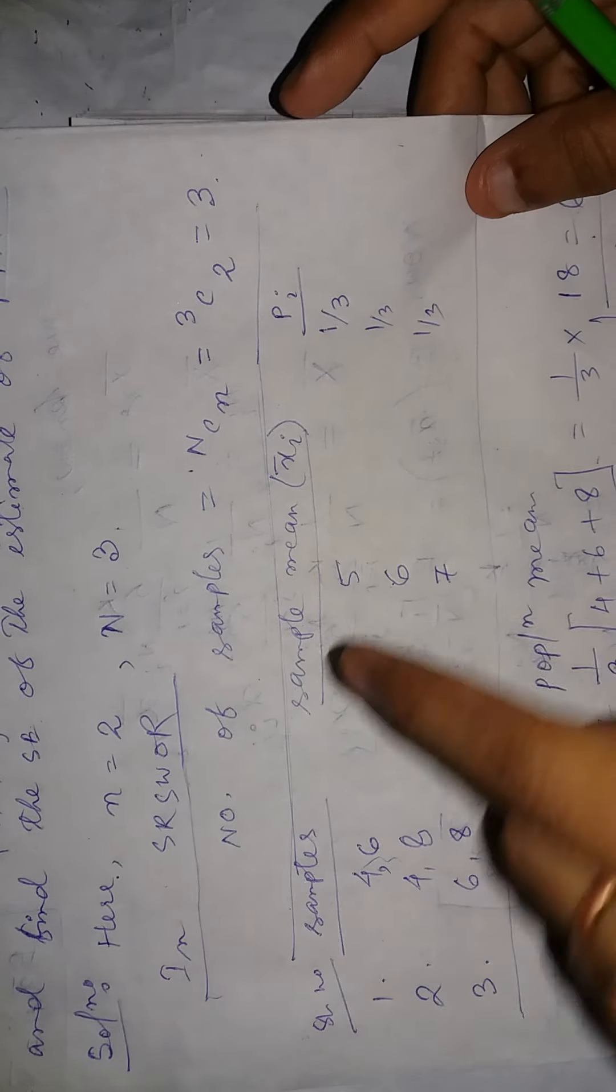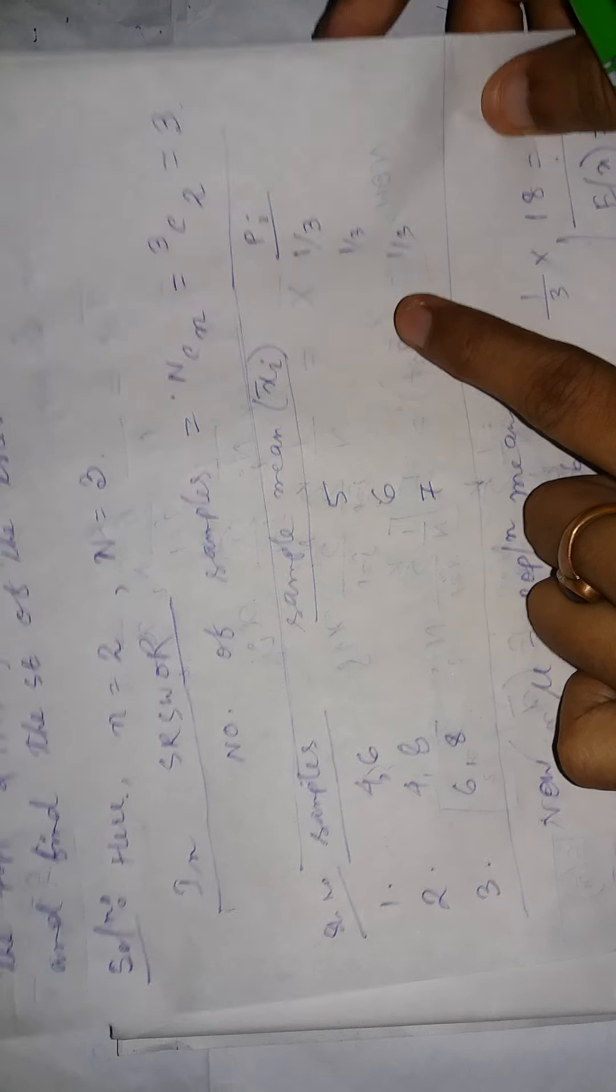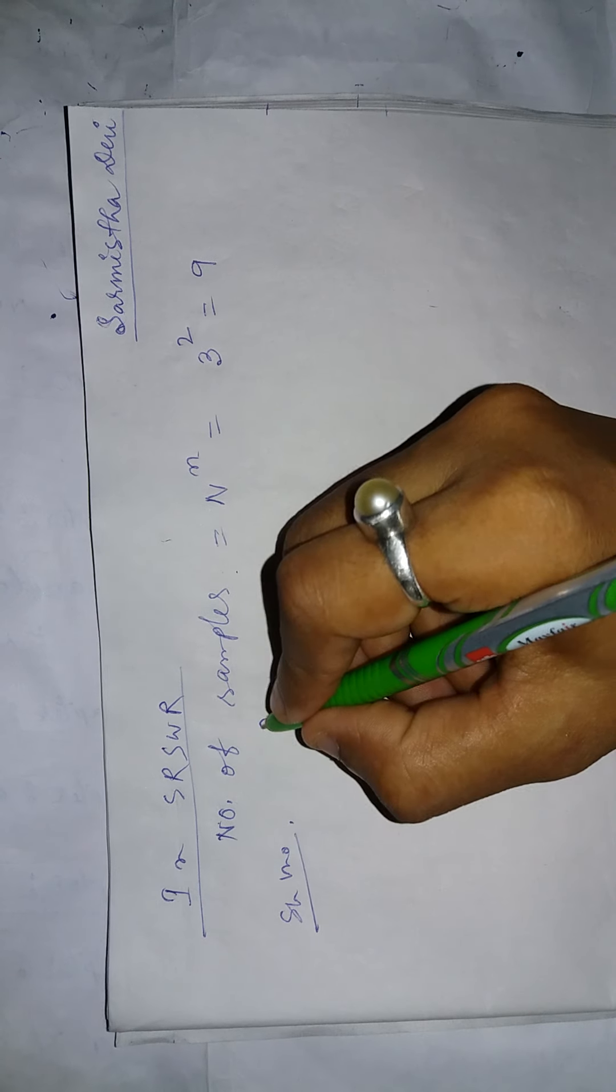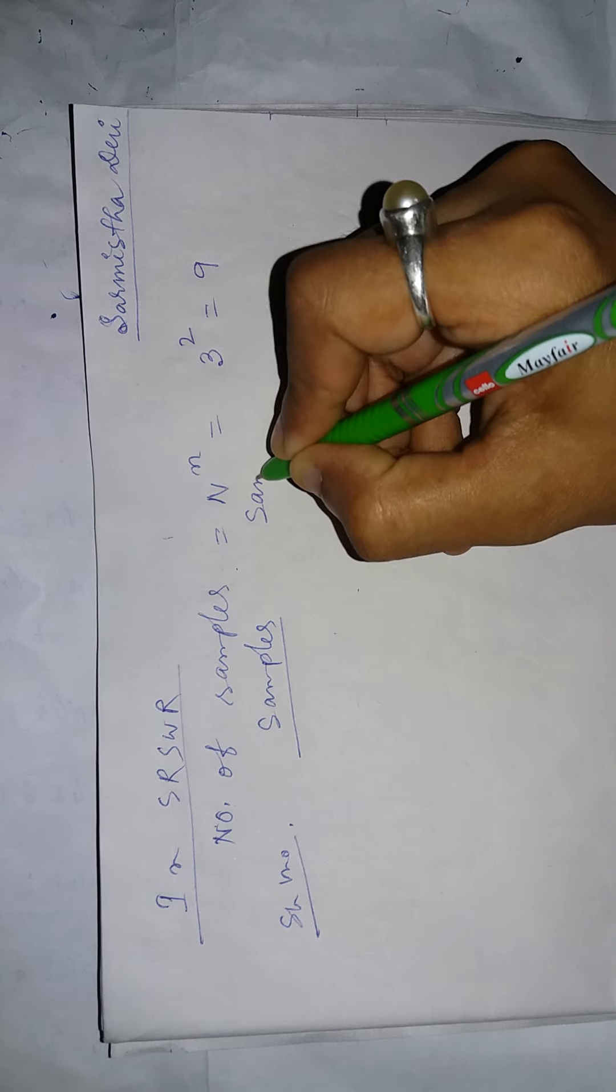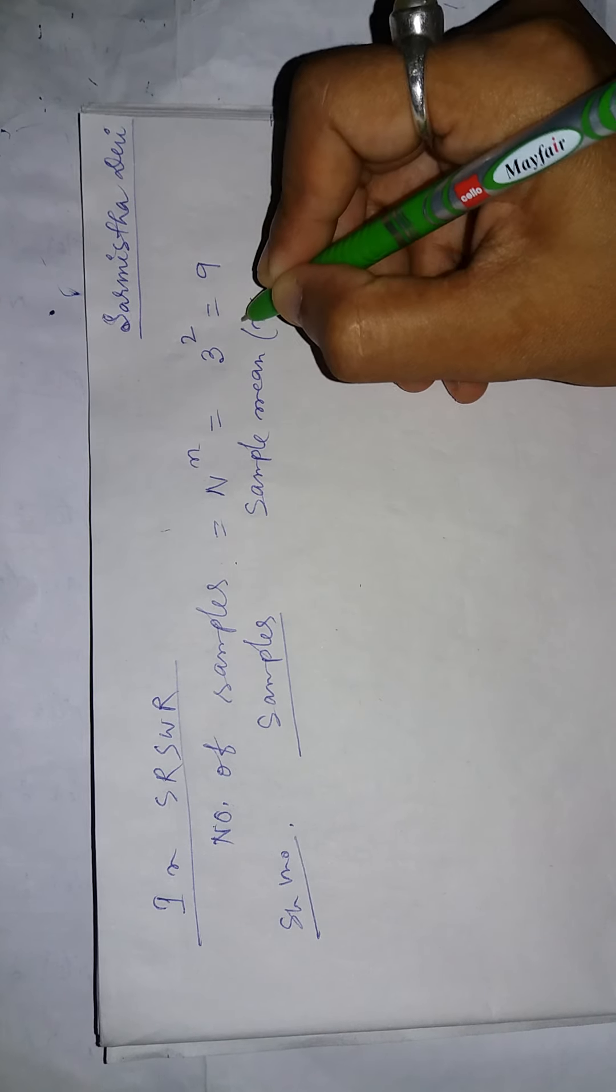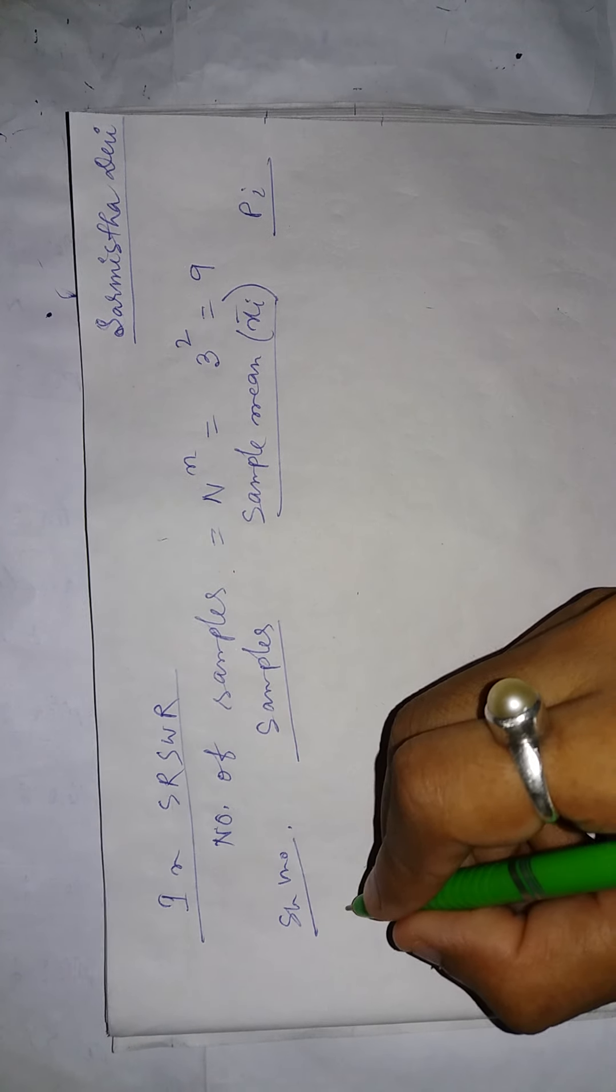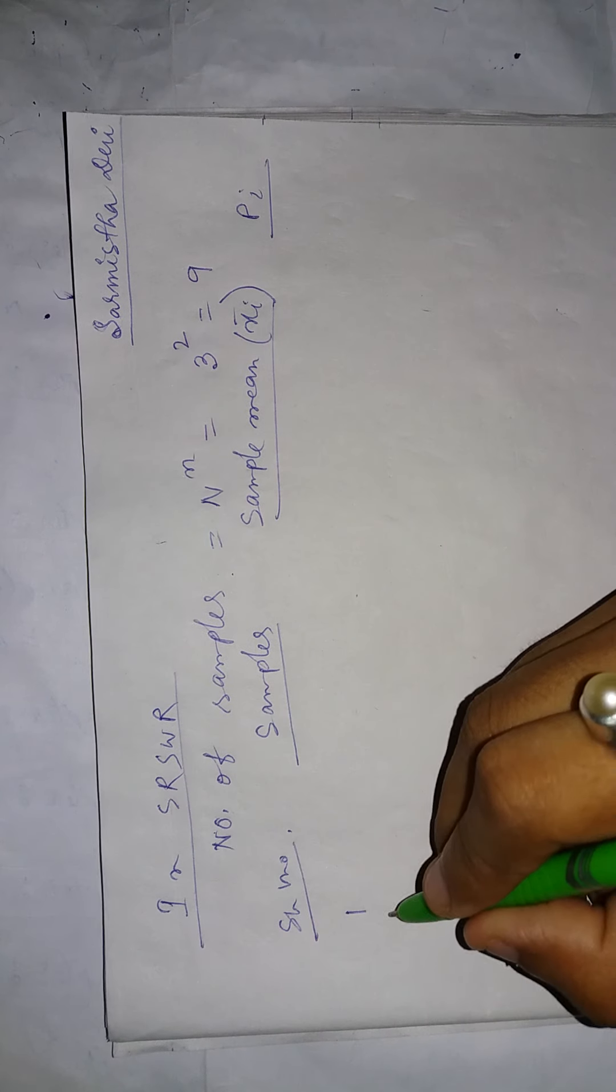Next step is to write down the samples. I will create a table with serial number, samples, sample mean x̄ᵢ, and probability.